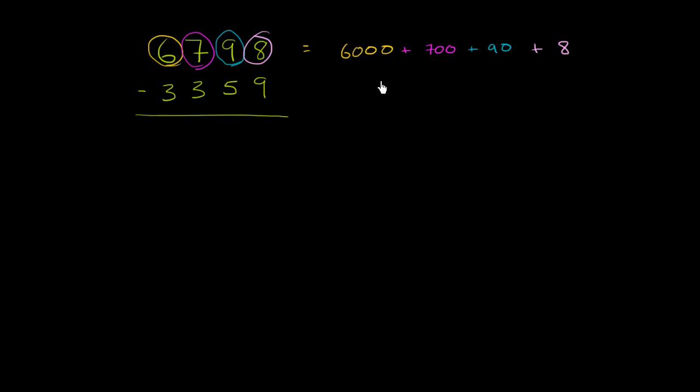I could subtract each of the places. So I could say this is going to be minus 3,000, minus 300, minus 50. A 5 in the tens place is just 50, minus 9. Here we're just explicitly showing what those place values represent. A 6 in the thousands place is 6,000 and a 3 in the hundreds place is 300.